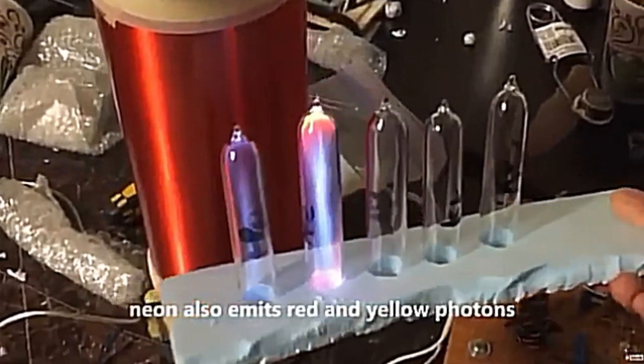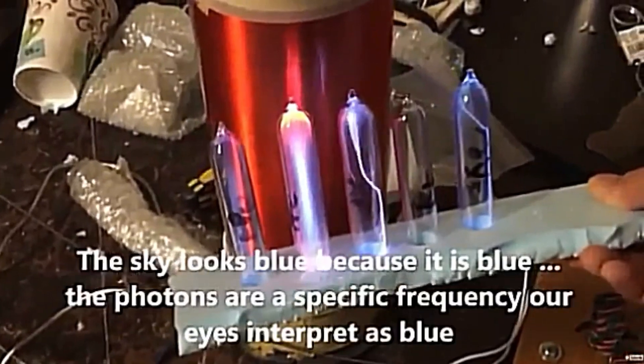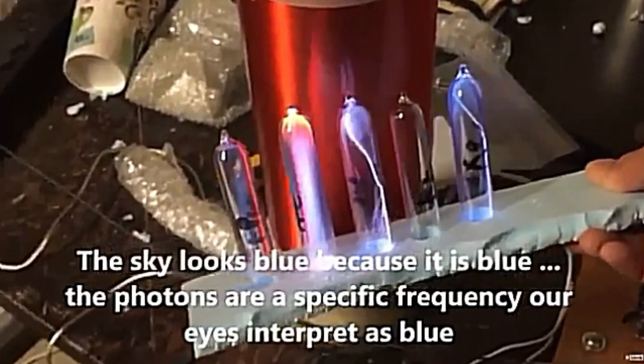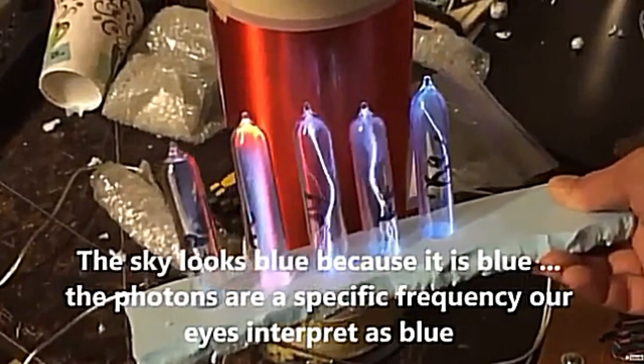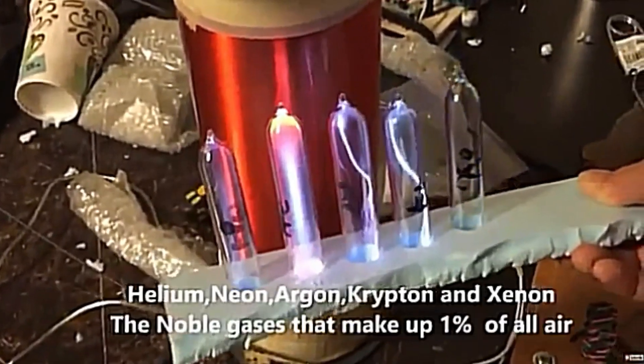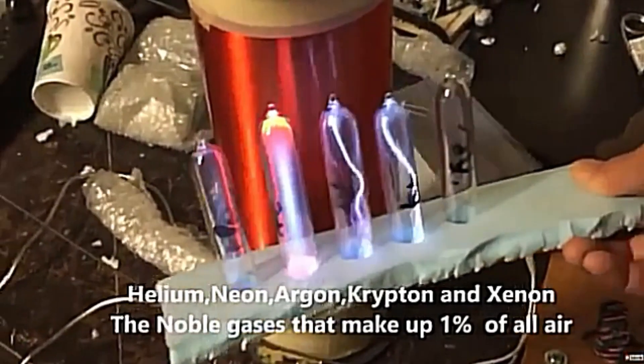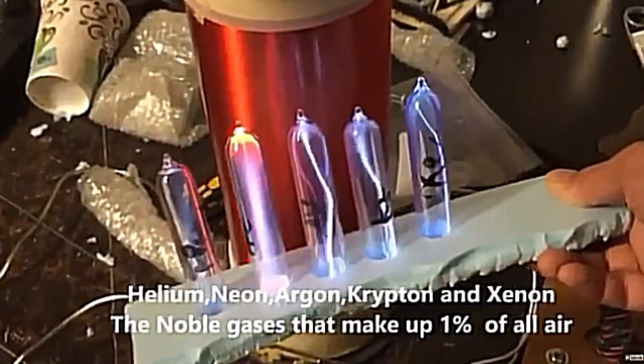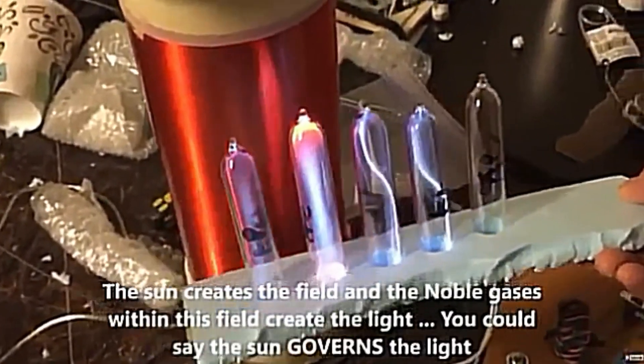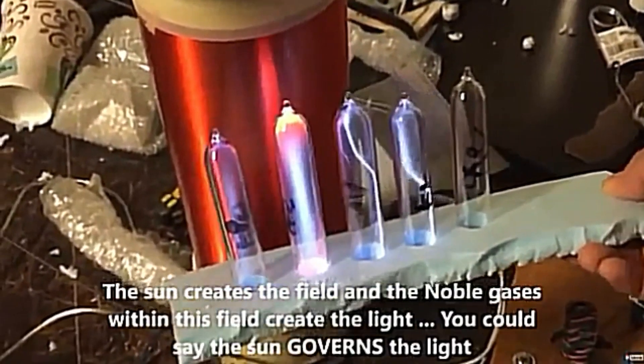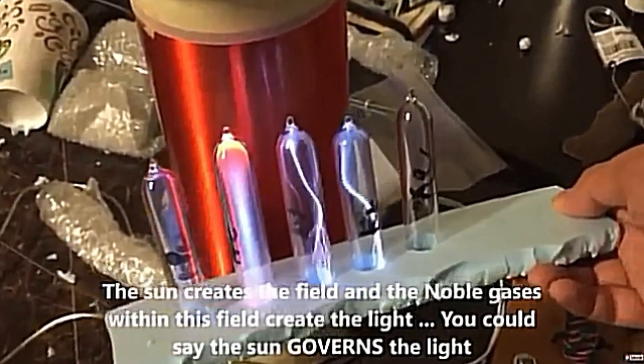Now neon will also emit red and yellow photons as well. The sky looks blue because it is blue. The photons are a specific frequency our eyes interpret as blue. So you have helium, neon, argon, krypton, and xenon. These are the noble gases that make up 1% of the air. So as you see, the sun creates the field and the noble gases within this field create the light. You could say the sun governs the light.